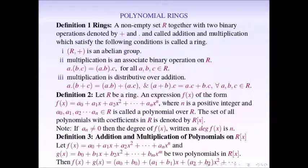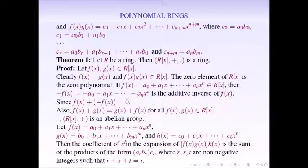We are going to perform addition and multiplication of polynomials. Consider two polynomials f(x) and g(x) in R[x]. Then f(x) + g(x) = (a0 + b0) + (a1 + b1)x + ... The coefficient of x^k in the new polynomial equals the sum of the coefficients of x^k in the first and second polynomials. The product polynomial's constant term is a0·b0, the coefficient of x is a0b1 + a1b0, and the coefficient of x^(n+m) is an·bm.